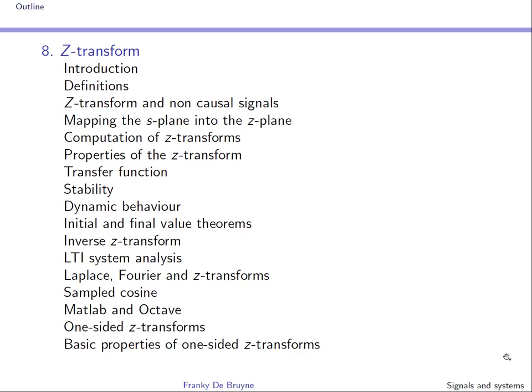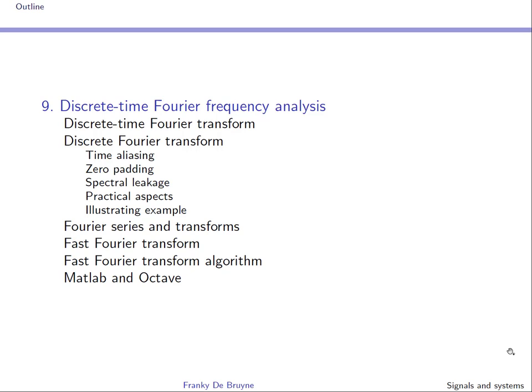Section 9 is the counterpart of section 5 but for discrete-time signals. This leads to the concept of the discrete Fourier transform, or DFT, which allows spectral analysis — characterizing the frequency content of a signal. We'll also discuss the fast Fourier transform algorithm to compute the DFT efficiently.